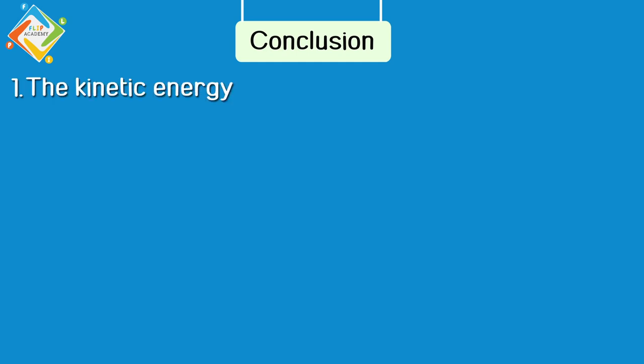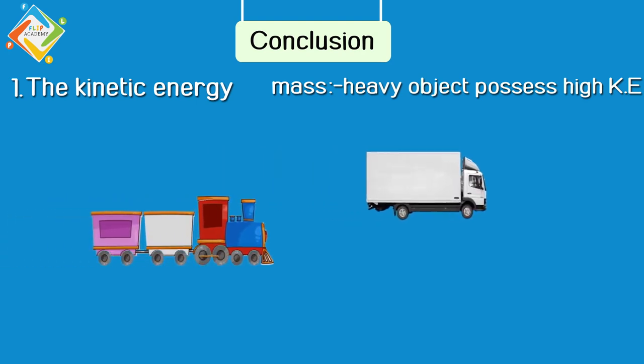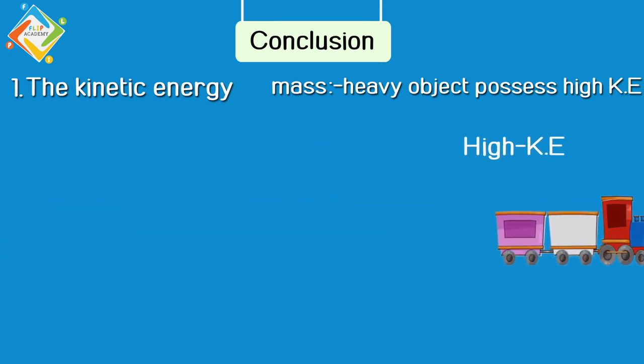From this formula, we conclude the first point: the kinetic energy is directly proportional to mass. That means if the object is more heavy, then the kinetic energy will be very high. If we talk about heavy trucks or trains, the kinetic energy will be very high.